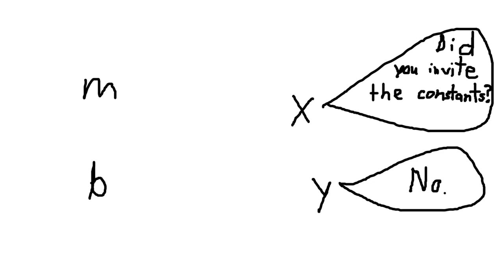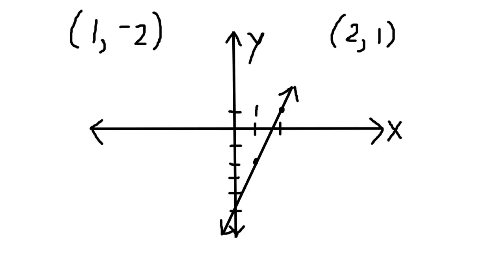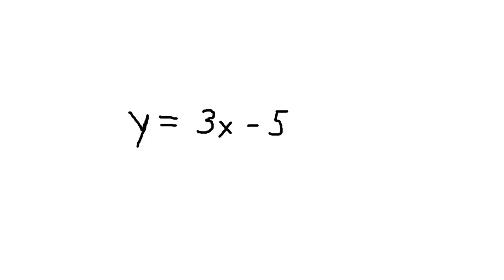If we graph the two points I described before, we can see that the y-intercept is negative 5, since the line touches the y-axis at negative 5. And the slope is 3, since the line moves three units up for every one unit it moves to the right. So the equation in slope-intercept form would be y equals 3x minus 5.